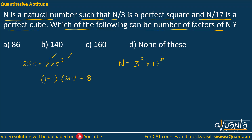Let us deal with the divided-by-3 part. We have 3 to the power a; we divide the number by 3 and should get a perfect square. That means the power of 3 must be a multiple of 2 after dividing by 3. So a must equal 2n + 1, and when you divide by 3 you get 3^(2n), which is a perfect square.